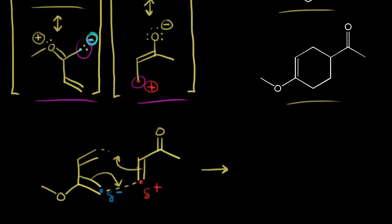So we form our cyclohexene ring. And then we would have our methoxy group coming off of this carbon, and we would have our ketone coming off of this carbon.